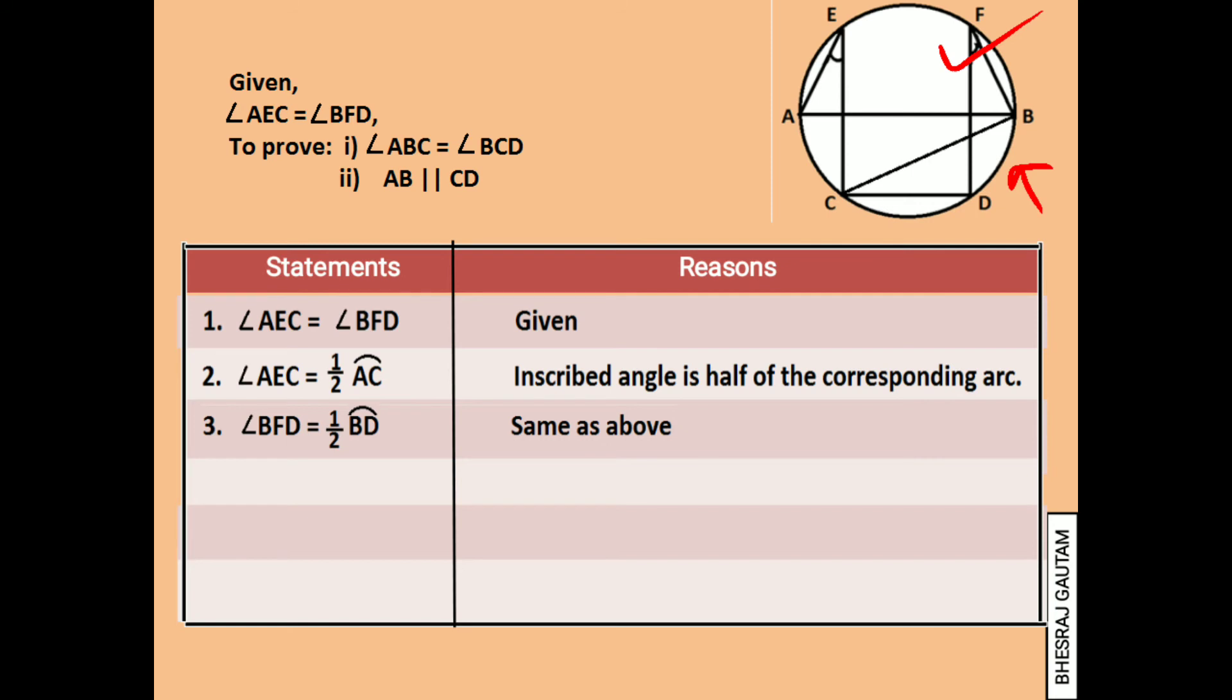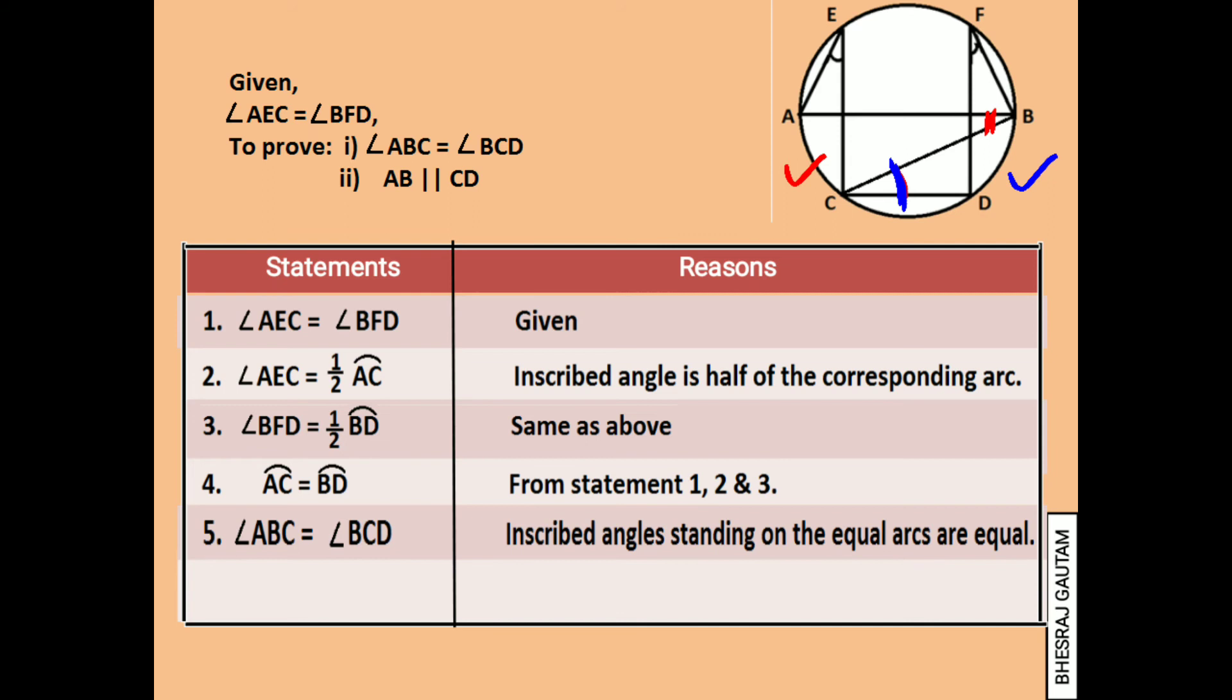Now if we compare statements 1, 2, and 3, it can be written that arc AC is equal to arc BD, as arc AC is forming angle ABC and arc BD is forming angle BCD on the circumference. So angle ABC is equal to angle BCD because arcs AC and BD are equal, and we have known that equal arcs always form equal angles.